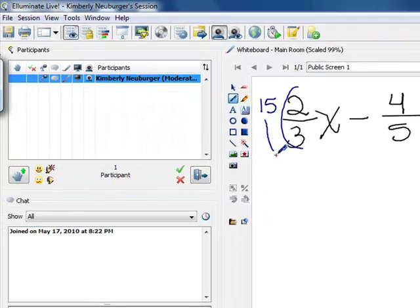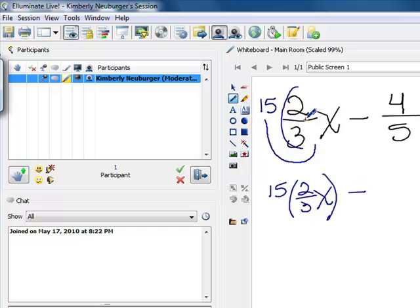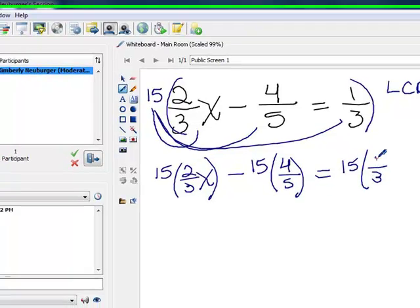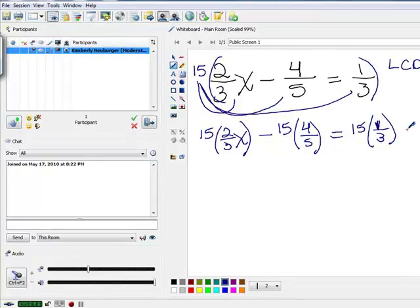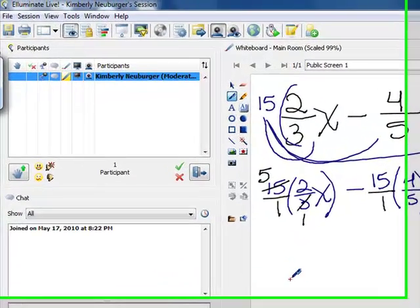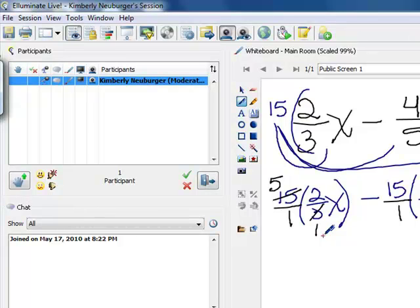And when we did that, we could take and distribute the 15 and do 15 times two-thirds x minus 15 times our 4-fifths, and that would equal 15 times one-third. And when you did that, you could remember that these 15s were all over 1, and when you multiply fractions, you cross-cancel. So if we took a look at our first section right here, this 3 could cross-cancel with a 15. And we'd say 3 goes into 3 once, and 15 five times. And then the only thing in the denominator here is 1, so we would no longer need the denominator, and you could just do 5 times 2 times x, which is 10x. And notice that our fraction has disappeared.